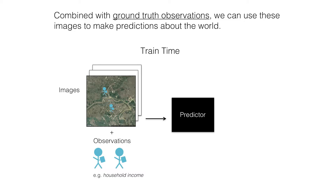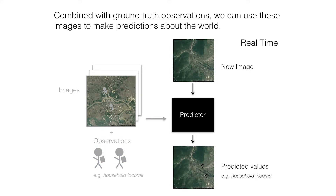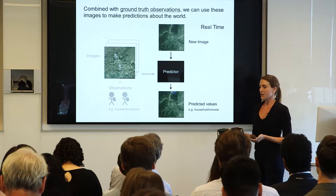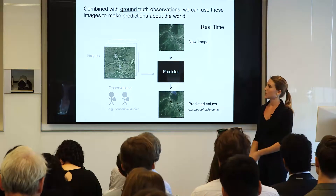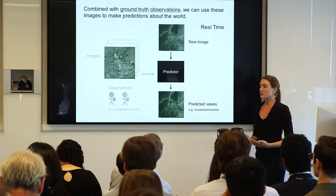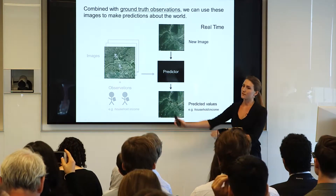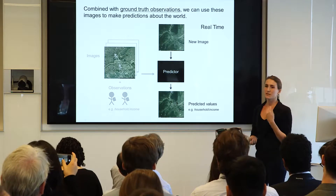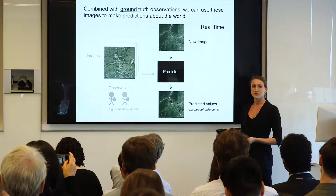This is great: we've trained the model and we want to generalize to new regions where we didn't send people out to survey. We put in a new image, feed it into the predictor, and it outputs a predicted value for household income in the new region. But we don't have a great way to validate the model. It's generally accepted that the more training data we can feed the model, the better predictor we'll get — so we want as many images and observations as possible.